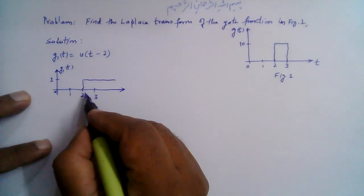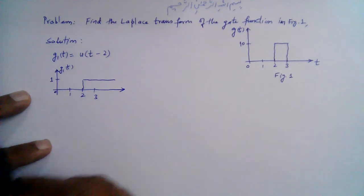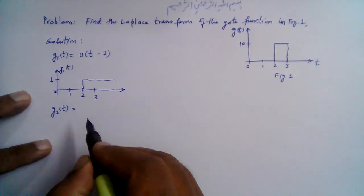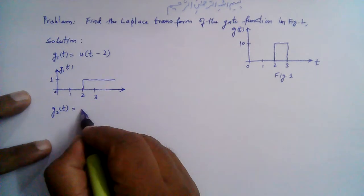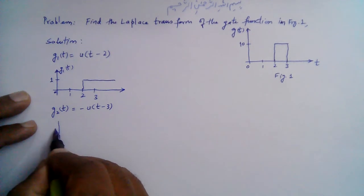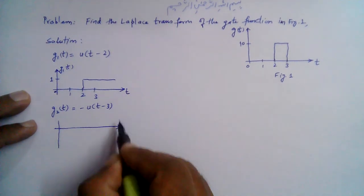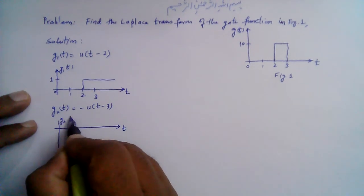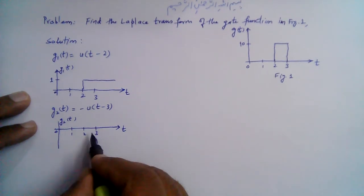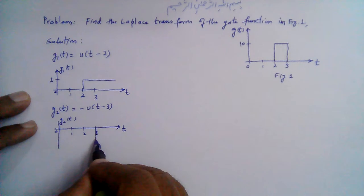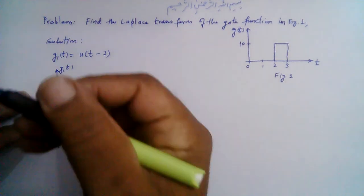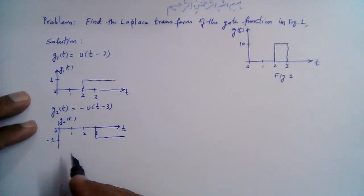That is u(t-2). We can consider a second function g2(t) which is -u(t-3). On the time axis with points 0, 1, 2, and 3, -u(t-3) begins at t=3 going downward with amplitude -1. If we add both of these together, the result is this pulse.